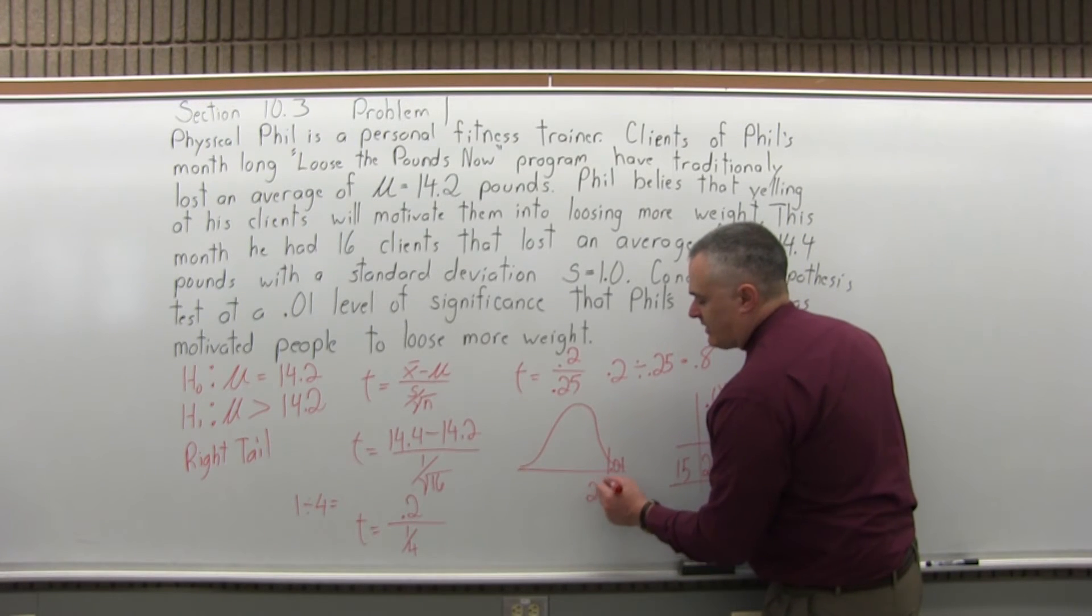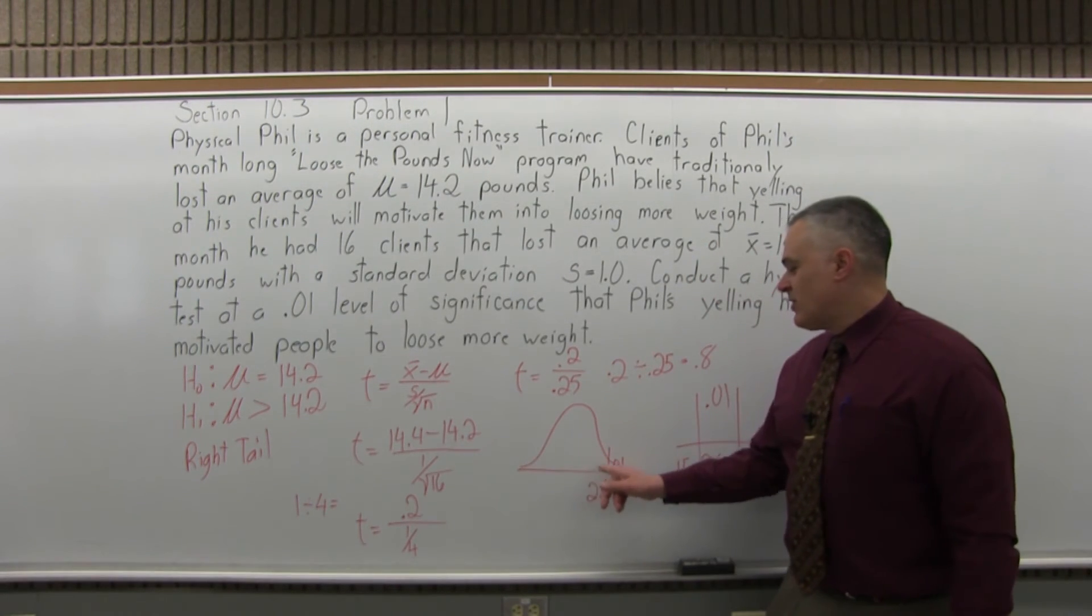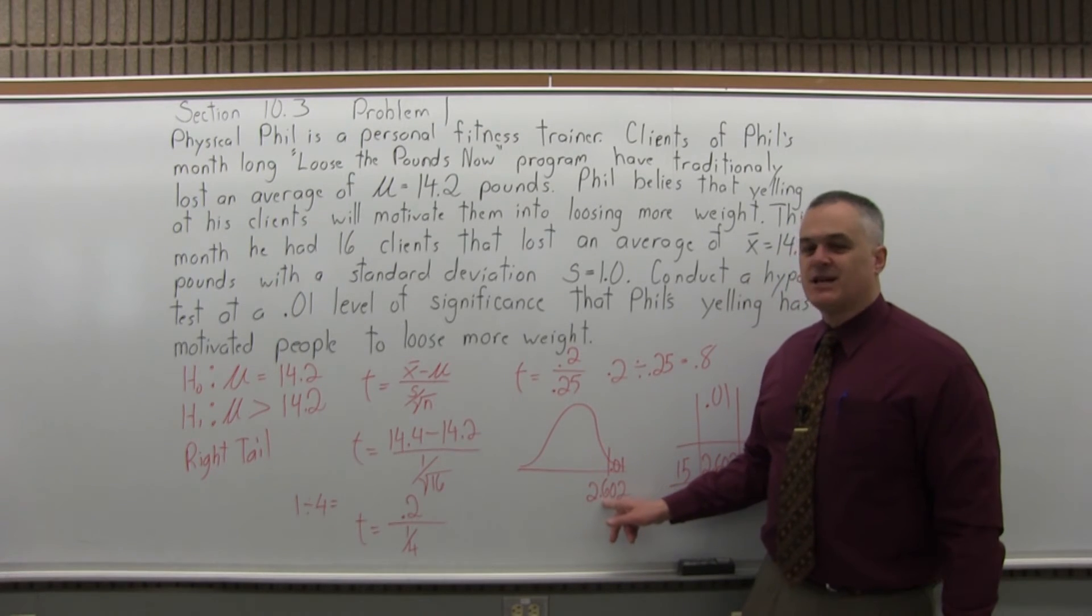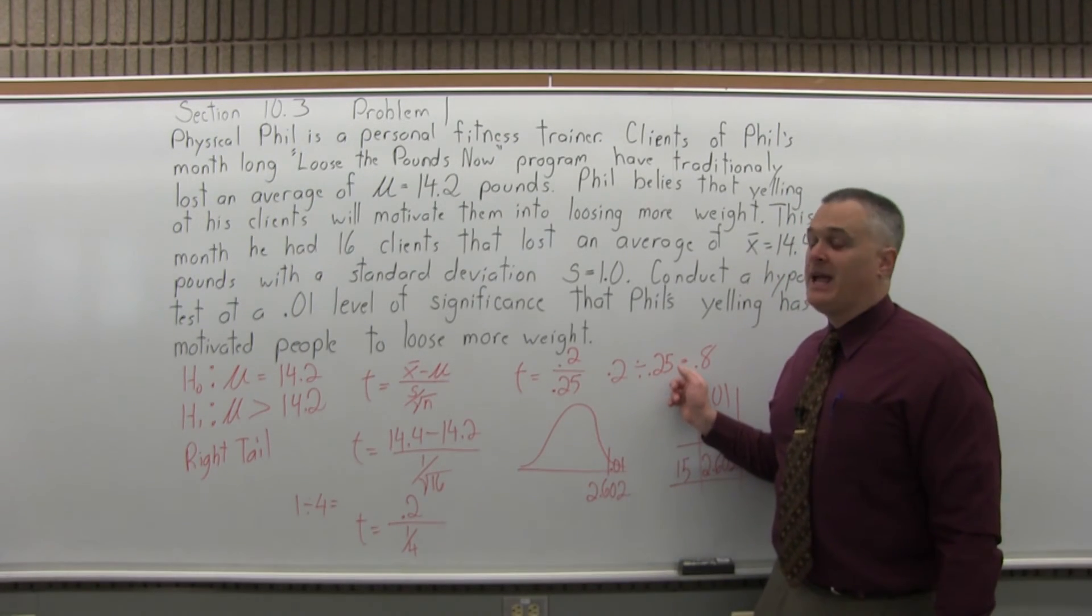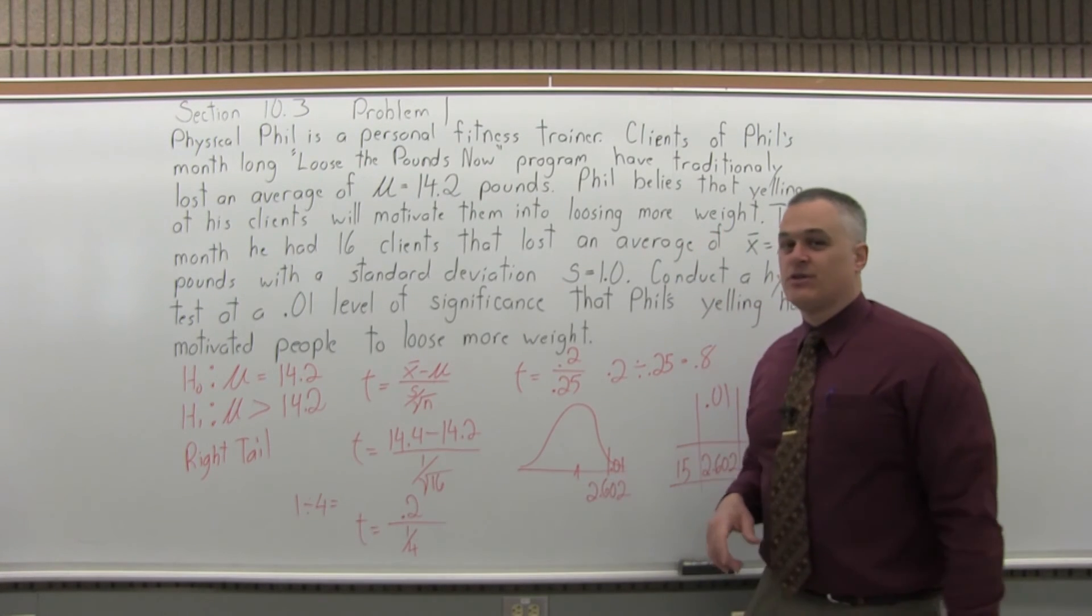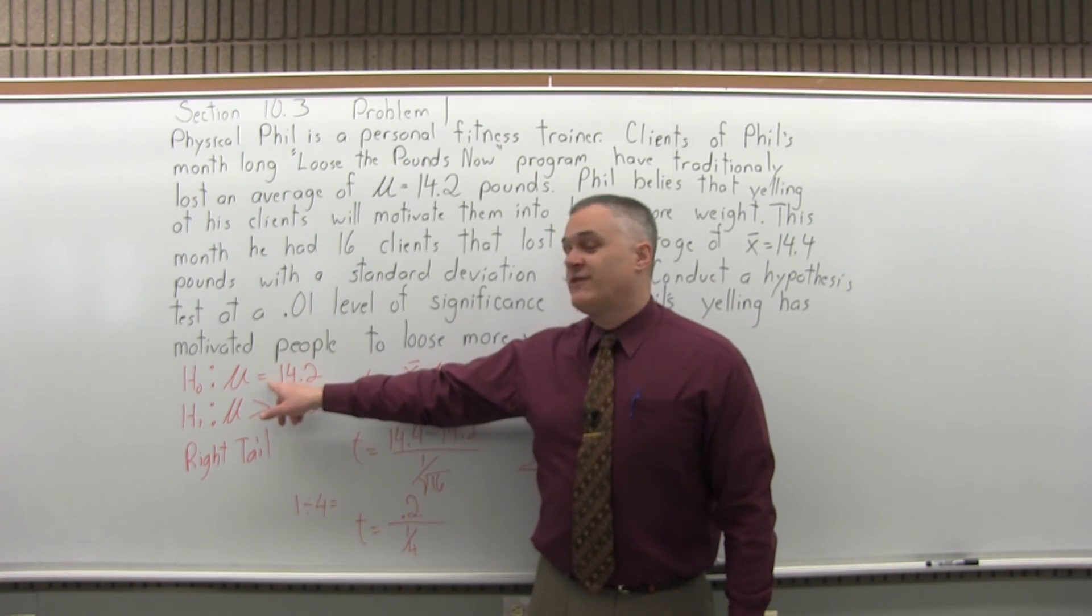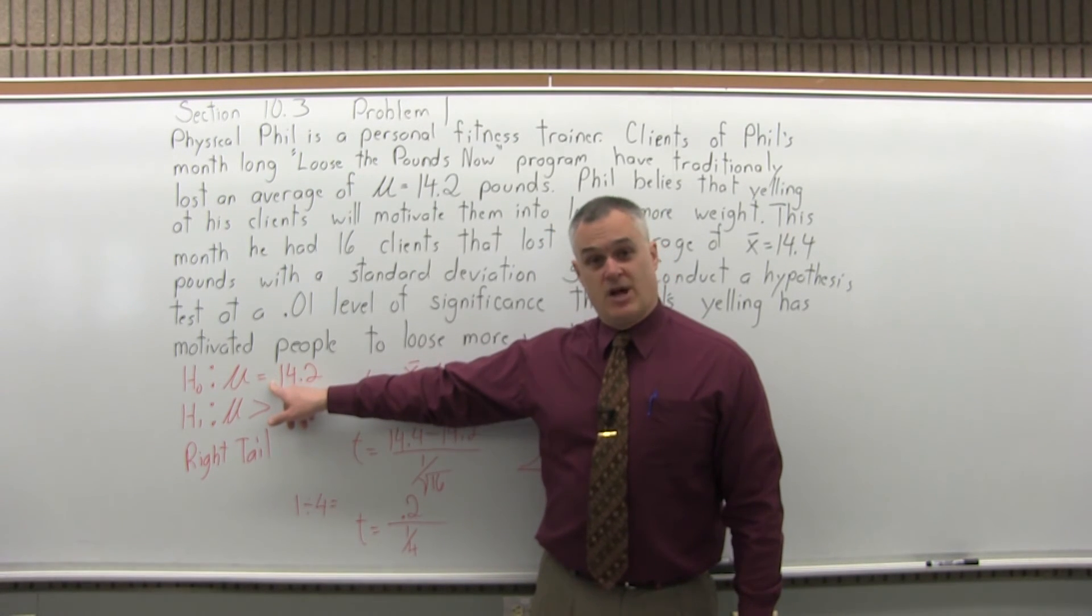So in order to get out into the critical region to cause you to reject the null, your computation for T has to go past 2.6-something, and we only had a 0.8. So 0.8 is not even close to going into the critical region. So our conclusion is fail to reject the null.